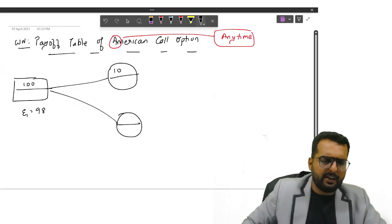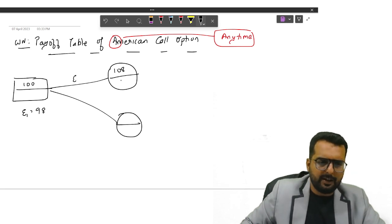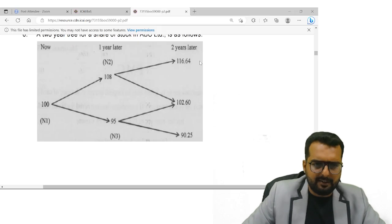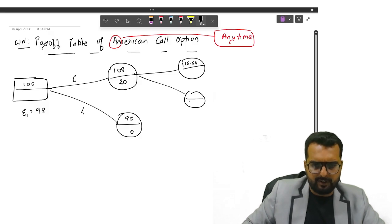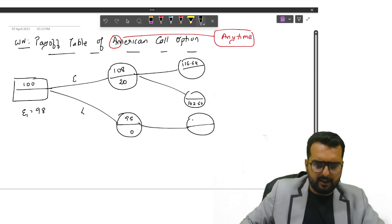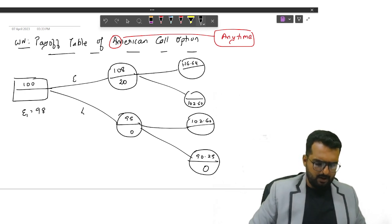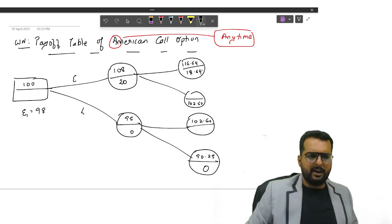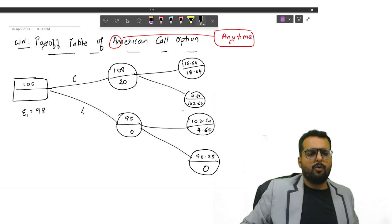Price may go up to 108. Everyone tell me, right to buy at 98, if the price goes up to 108, will you exercise or lapse? You will exercise and you will make a profit of how much? 10. If the price falls down to 95, you will lapse. Okay, from here, the price is again going up to 116.64, or the price is going to fall down to how much? 102.6. It may again go up 102.6, it may fall down 90.25. And here also I will get the number as how much? 4.6.